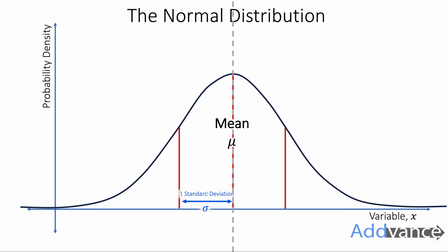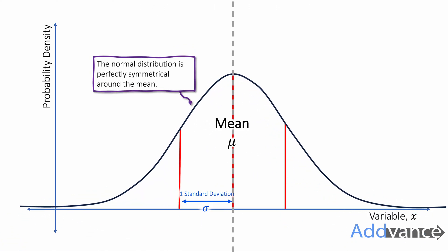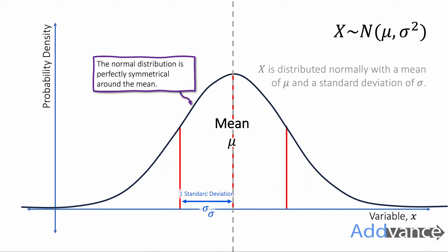The normal distribution is perfectly symmetrical around the mean. So we are perfectly happy to flip it around the mean and it is still perfectly symmetrical. We say that x is distributed normally with a mean of mu and a standard deviation of sigma if it fits this shape.